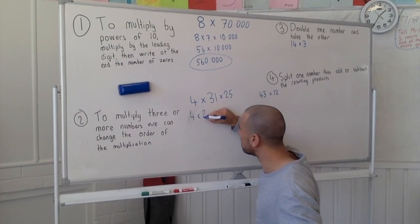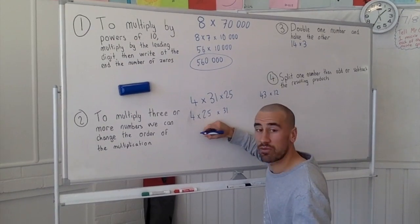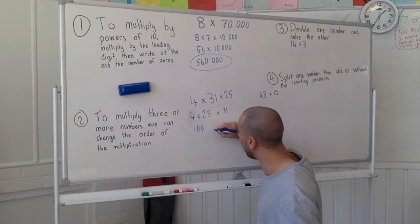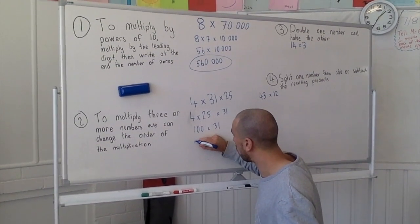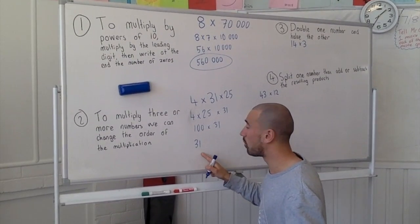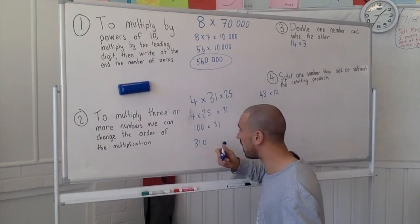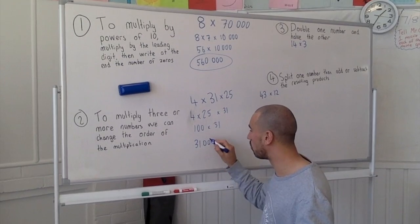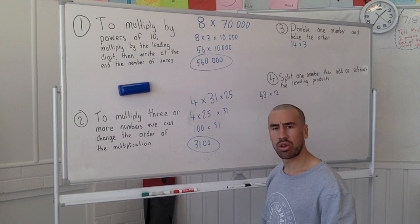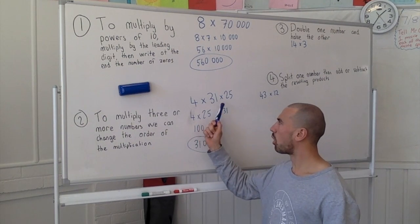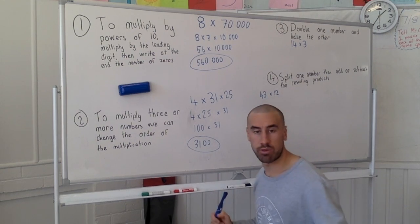We can go 4 times 25, that sounds a lot better doesn't it, times 31. 4 times 25 gives us a perfect 100 times 31. 100 times 31 we know it's going to start with 31. 31 times 1 is 31, times 10 is 310, times 100 is 3100. Strategy number two, it's a lot easier way to tackle problems involving three or more multiplication sums. Awesome, let's move on to strategy number three.